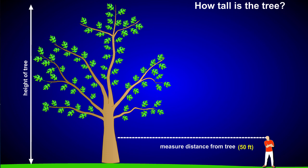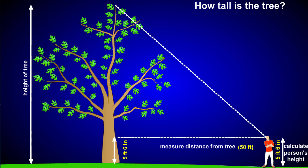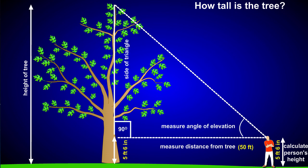Recall how tall you are — for example, 5 feet 6 inches. Next, use a clinometer made from a simple protractor to measure the angle of the line of sight from your eye to the top of the tree. Sight along it while looking up at the top of the tree and read the angle off of the protractor. This is the angle of elevation. In this case, it's 30 degrees.